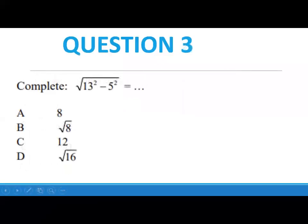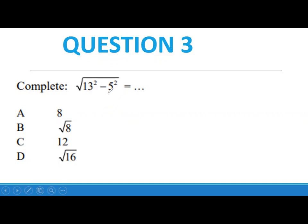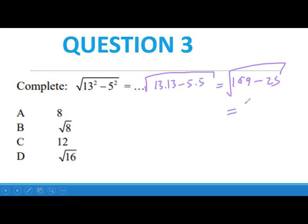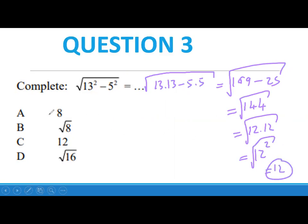I hope everything is fine so far. Question three: calculate the square root of 13 squared minus 5 squared. Please try first and then come back. So 13 squared is 13 times 13, and 5 squared is 5 times 5. That gives us the square root of 169 minus 25, which is the square root of 144. Since 144 equals 12 times 12, the answer is 12. C is the correct answer.